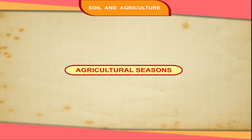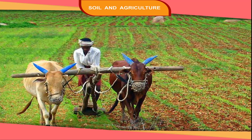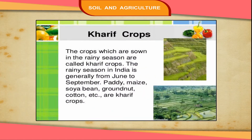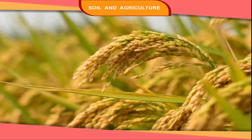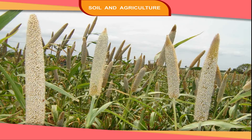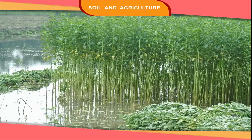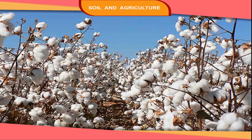Agricultural Seasons: Different crops are grown in different seasons. The kharif season begins with the arrival of monsoon. Crops grown in this season are called kharif crops. These crops are paddy, millet, jowar, bajra, jute and cotton.